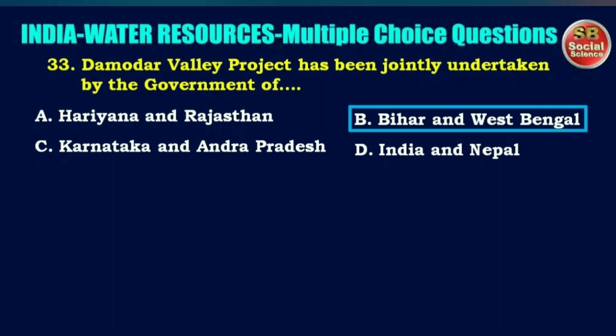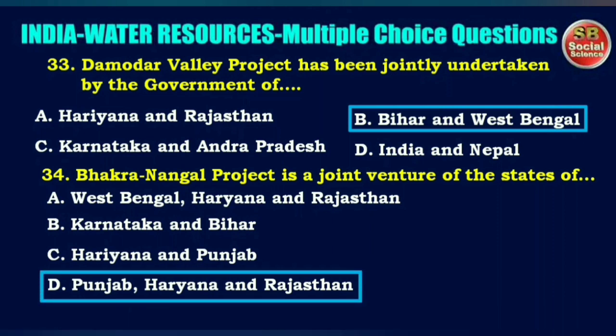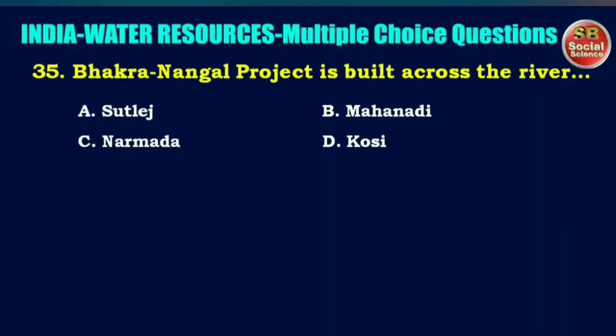Bhakra-Nangal project is a joint venture of the states of — options are West Bengal, Haryana and Rajasthan; Karnataka and Bihar; or Punjab, Haryana and Rajasthan. The right answer is option D: Punjab, Haryana and Rajasthan.